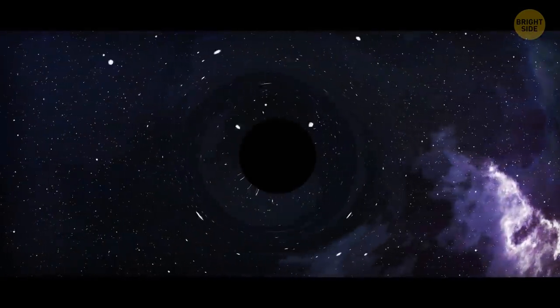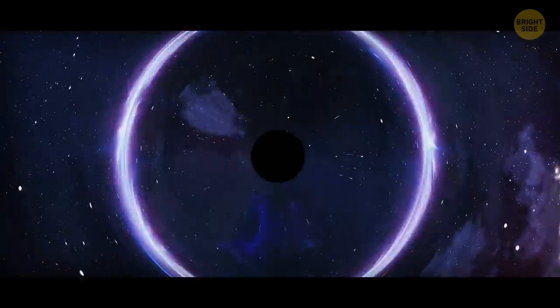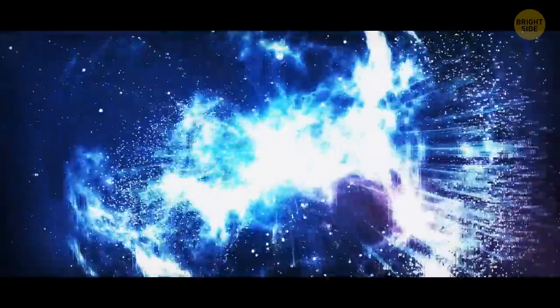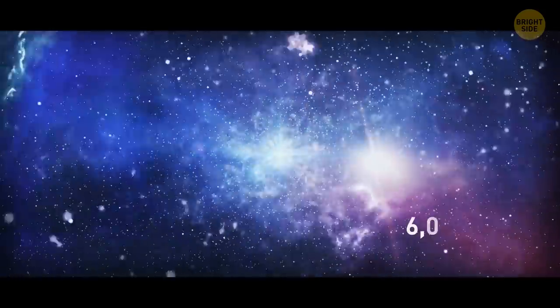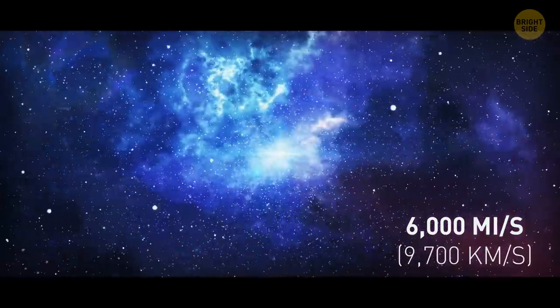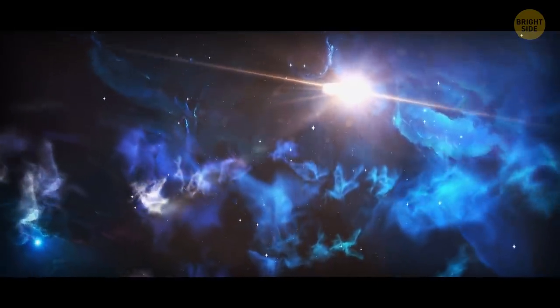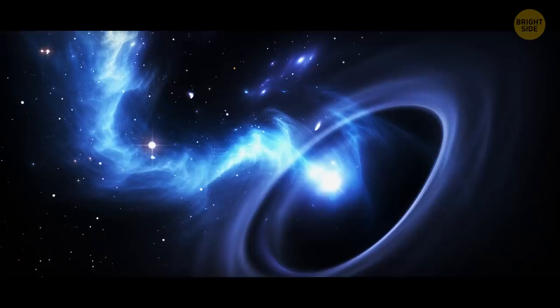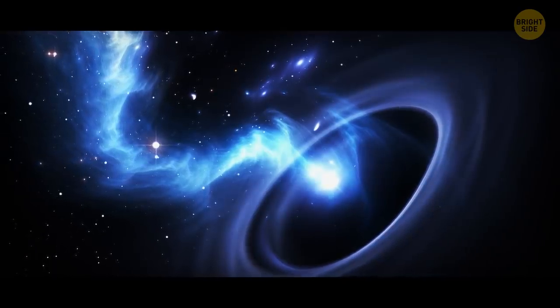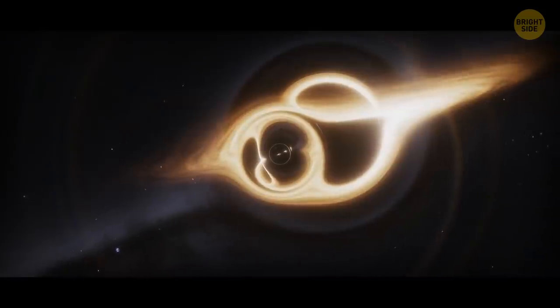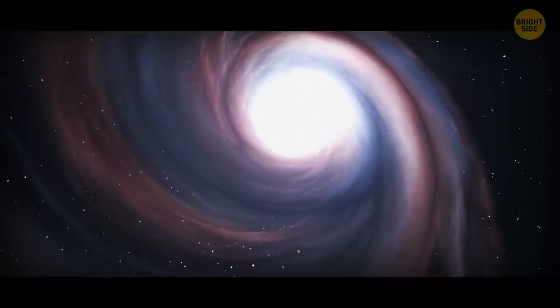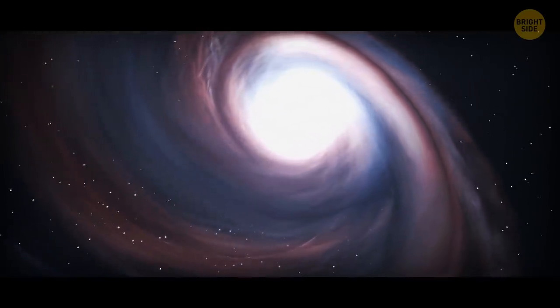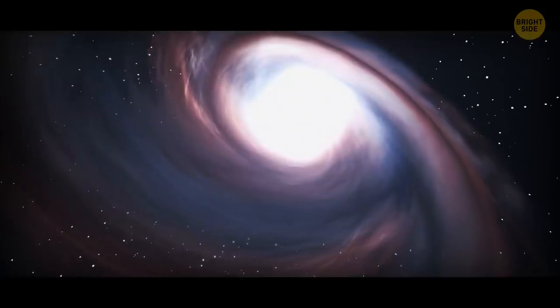When a black hole eats a certain amount of star material, it starts spitting it out. Powerful beams of energy are ejected at speeds of over 6,000 miles per second. This is the light that attracted scientists' attention. In the end, the black hole has completely absorbed about half of the star and spit out the other half into space. And even though we watched this process for only a couple of minutes, it was happening for six months.